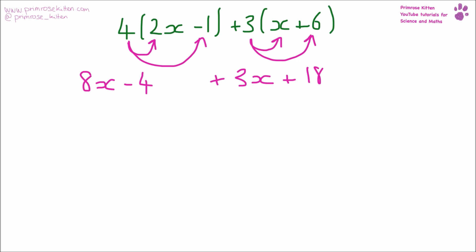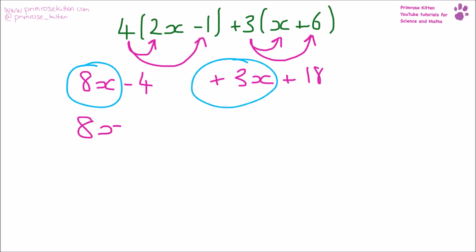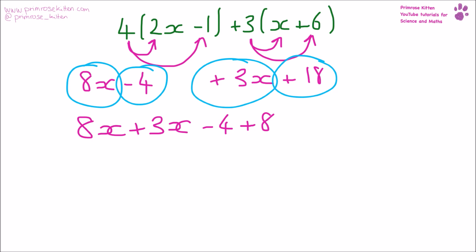Now we need to get all the things that are the same together. So here we have 8x and 3x, and here we have numbers: minus four plus 18. Eight x plus 3x gives us 11x. Minus four plus 18 gives us plus 14. So we've expanded and simplified.